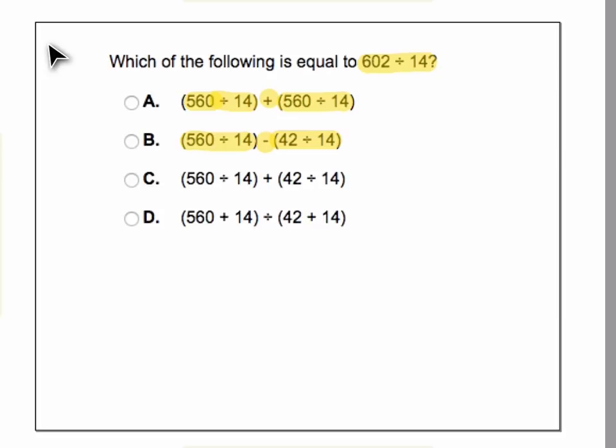In C, we have 560 divided by 14, 42 divided by 14, and we're adding those together. And then finally in D,